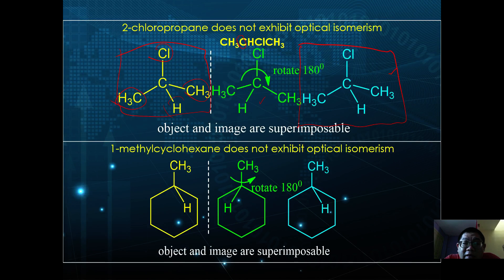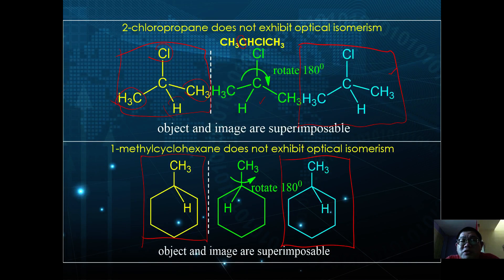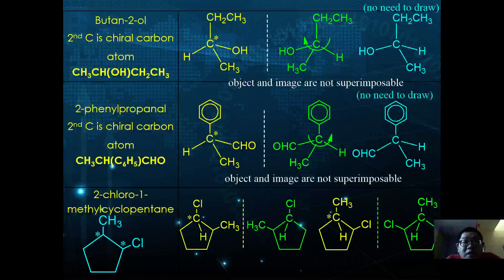Similarly, 1-methylcyclohexane also does not exhibit optical isomerism. When the CH3-bearing carbon is reflected and the image is rotated 180 degrees, the object and image are superimposable, so it does not exhibit optical isomerism.